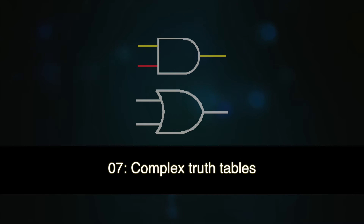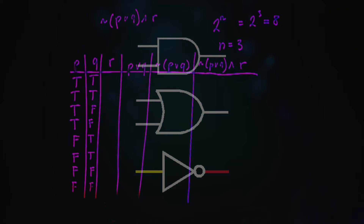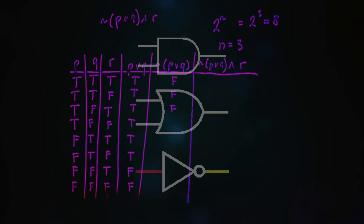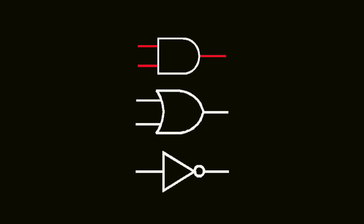Welcome to the next video on truth tables, in which we will be looking at somewhat more complicated truth value tables. In the first example I am going to show you a different way we can use truth value tables. In the very first video, when we were talking about the laws of logic, I showed you a few examples where you could prove these laws using truth tables. Now we can extend that and prove many different things with these truth value tables.